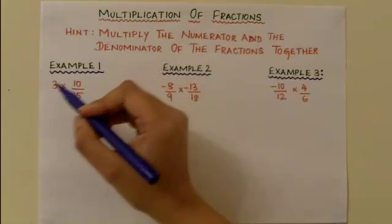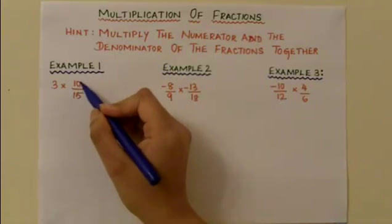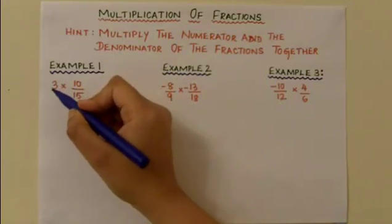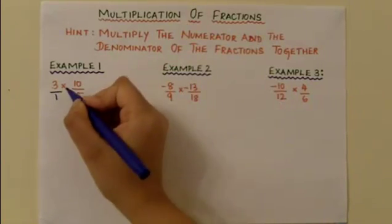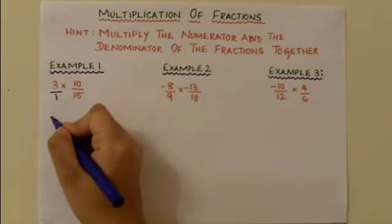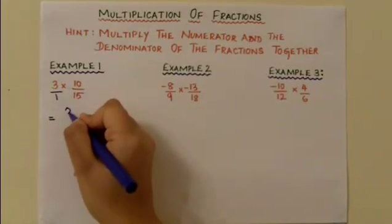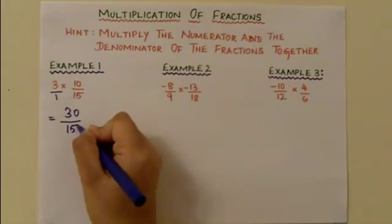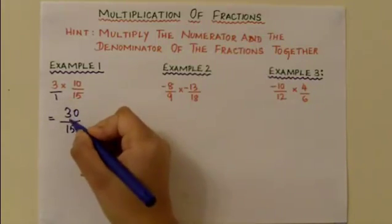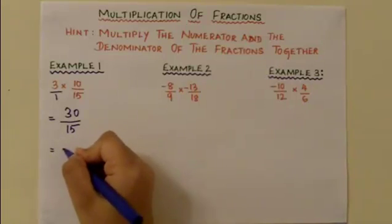Looking at example 1, you can see that it is 3 times 10/15. This 3 can be written as 3/1. Multiplying the numerators together we have 3 times 10 is 30, and 1 times 15 is 15. So 30 divided by 15 is 2.